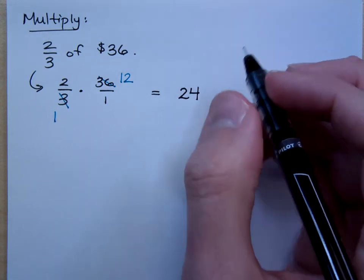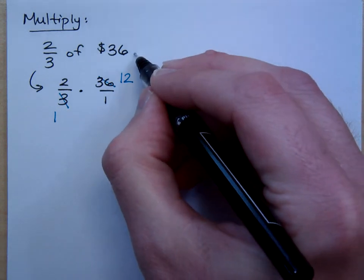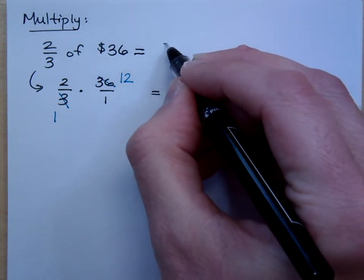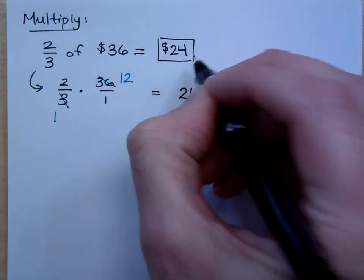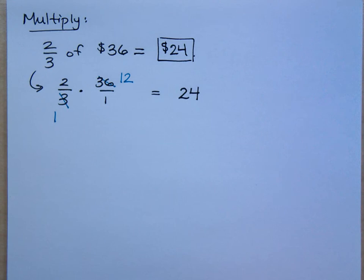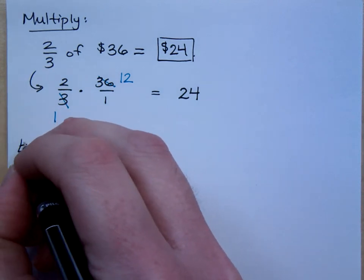That's just 24. So if I look at this, two-thirds of $36 is $24. You guys okay with that? Let's try this guy.